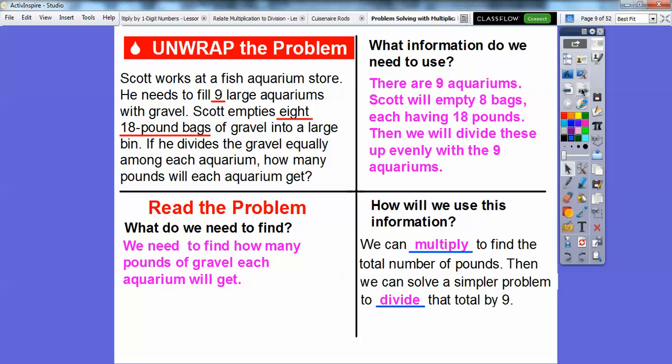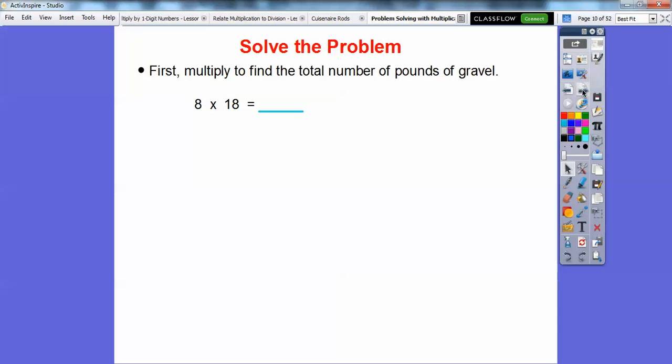How are we going to use this information? We're going to multiply eight times 18 to find the total number of pounds, then divide that by nine. We can make that big number a smaller number so we can divide it by nine using the distributive property.